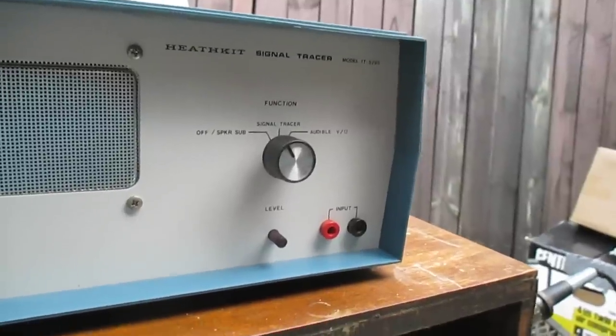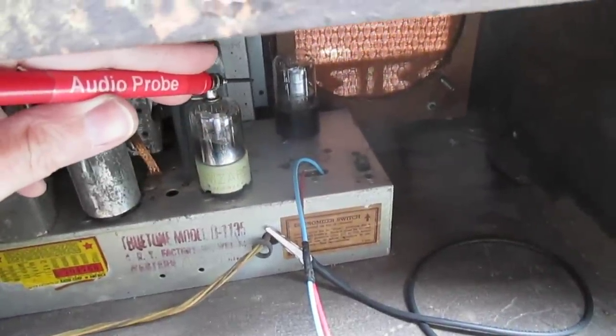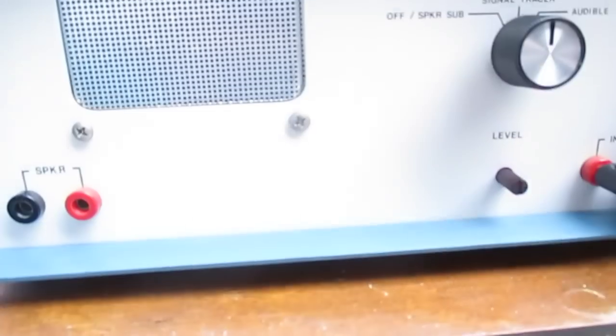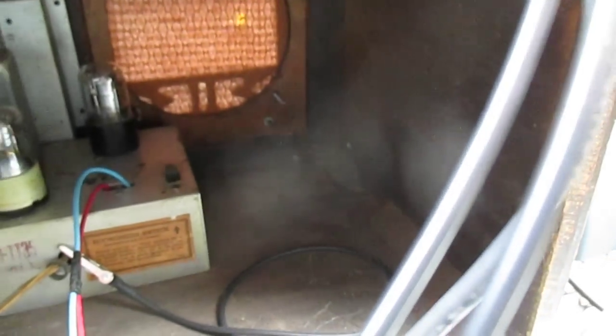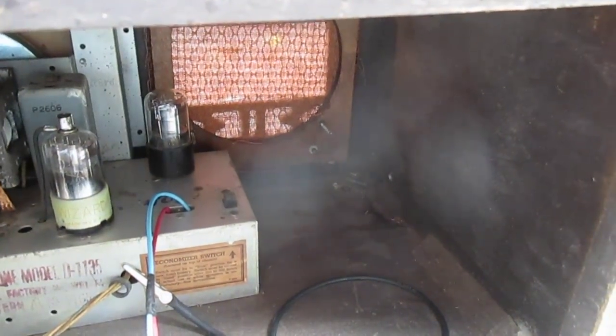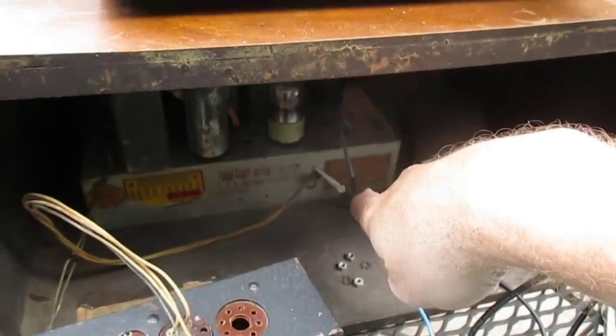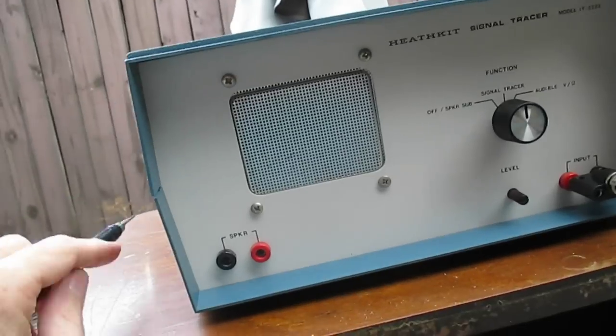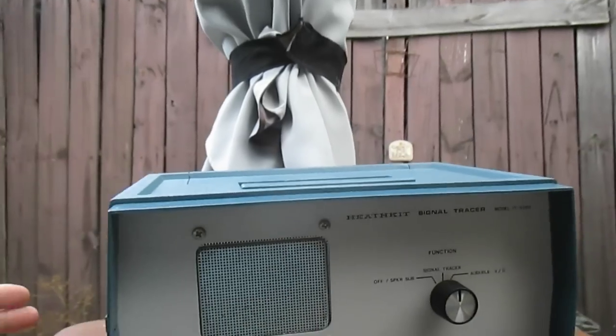All right I'm going to touch the AF probe to the grid cap of the first audio and detector tube since this is already detected audio here. As you can hear we have audio in the speaker. Let's take the RF probe. Okay we're getting some issues here. All I have to do is ground the generator to the chassis and we're getting some RF through here. But whenever I touch my RF probe to the grid cap of the IF it loads it down and kills it all together. But we're going to have to stop right here because the bottom's fixing to fall out and I'm not going to get caught in the rain.